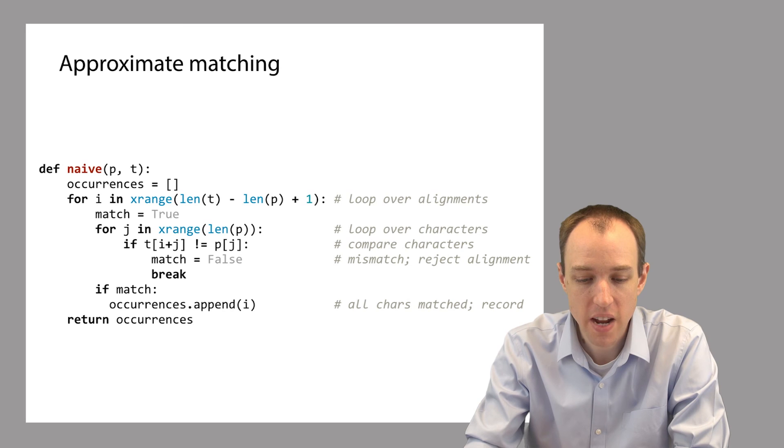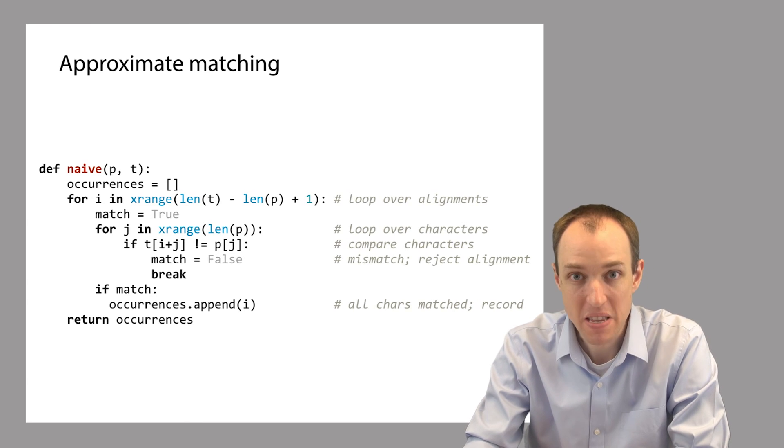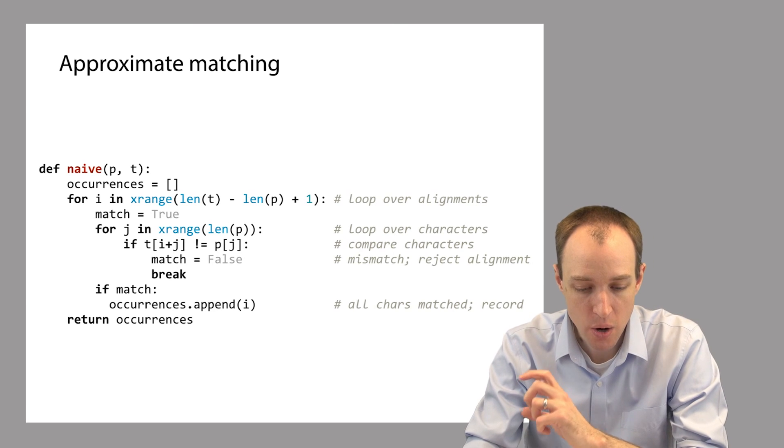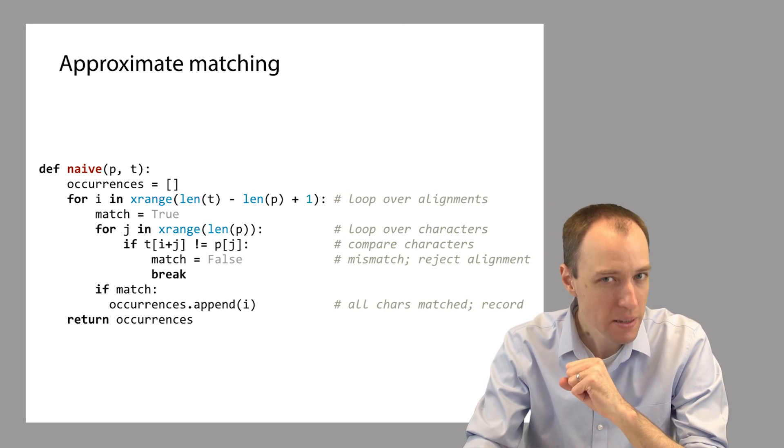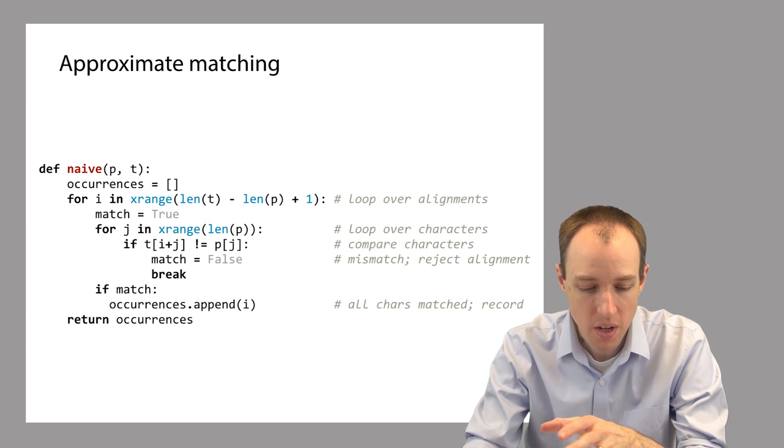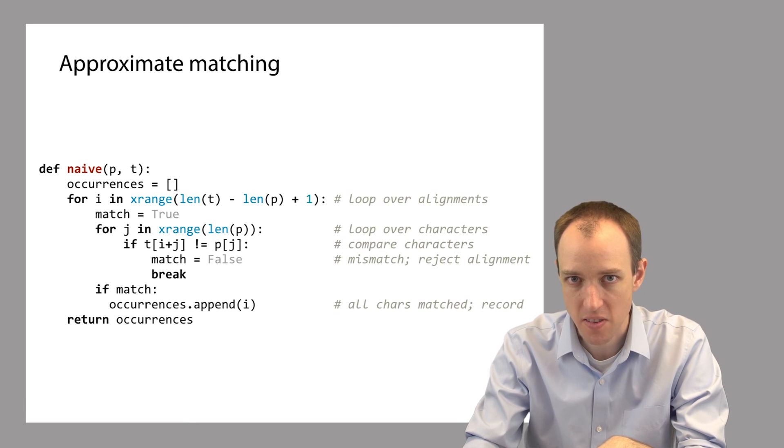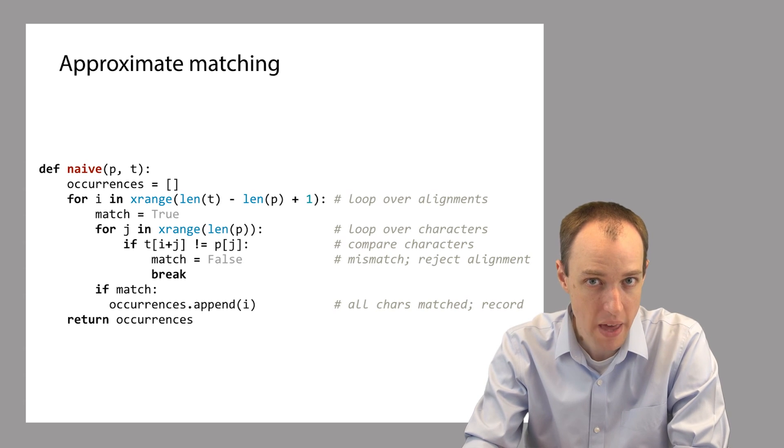So here's our naive exact matching algorithm that we saw before. Let's say that we wanted to adapt our naive exact matching algorithm to allow mismatches. In other words, we want to look for occurrences of the pattern P within the text T that are within some Hamming distance. So exact matches are within a Hamming distance of zero. But we also want to allow for matches that are within some Hamming distance greater than zero. So can we modify this algorithm to do that?